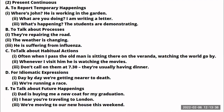Now let's look at the present continuous. One use is to report temporary happenings — things happening just now, temporarily. For example: 'Where is John? He's working in the garden.' 'What are you doing? I am writing a letter.' 'What's happening? The students are demonstrating.' The second use is to talk about processes — things that are undergoing a process: 'They are repairing the road,' 'The weather is changing,' 'He's suffering from influenza' — something passing through a process that may go on for some time.